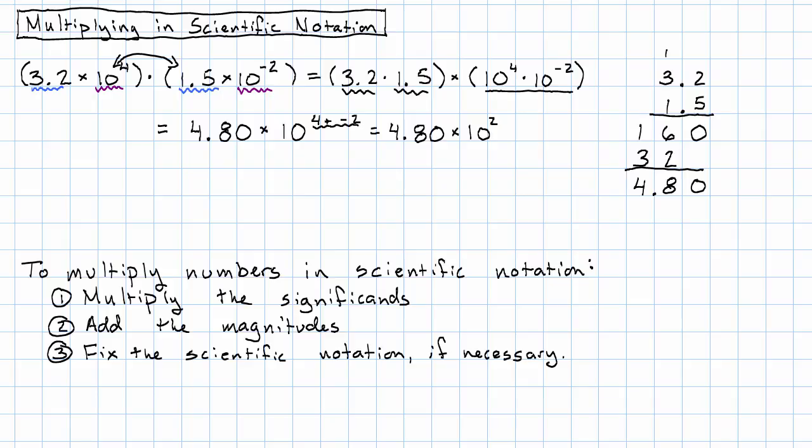Why might we need to fix the scientific notation? Well, long story short, sometimes when we multiply one-digit numbers, we get a two-digit number. Let's see an example.